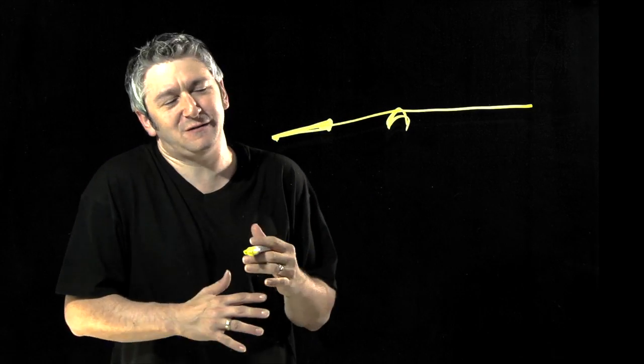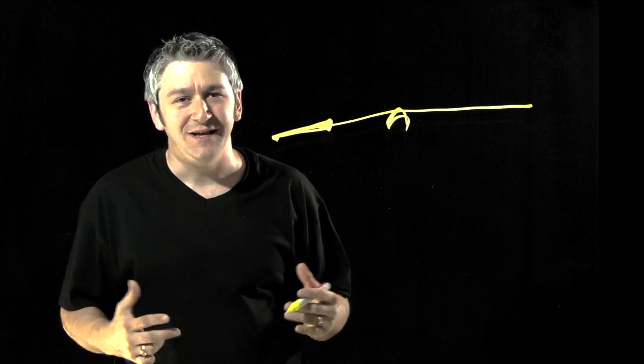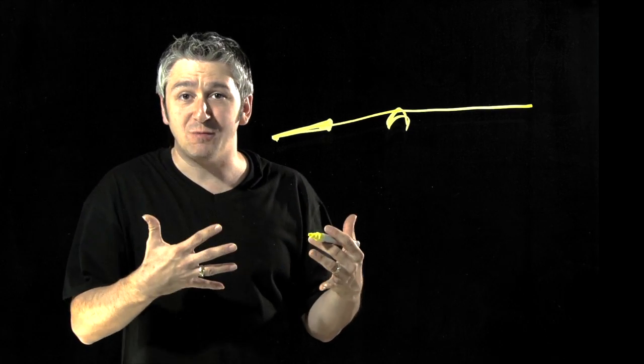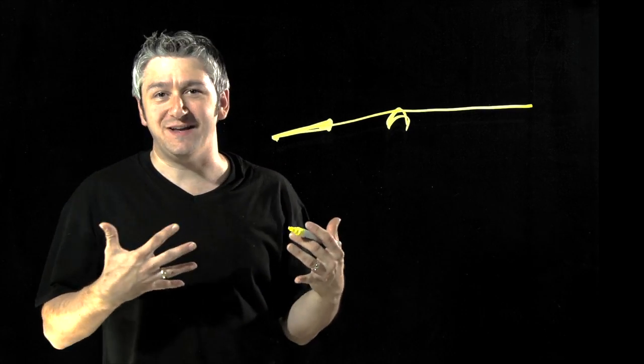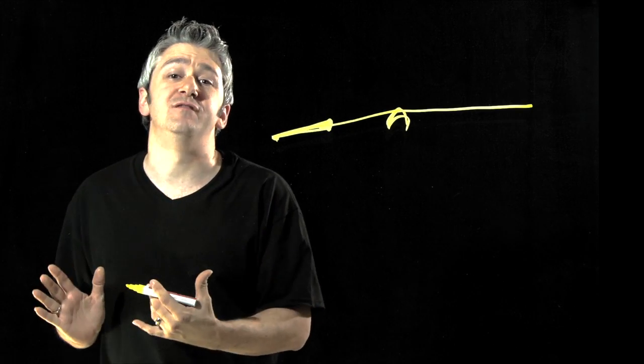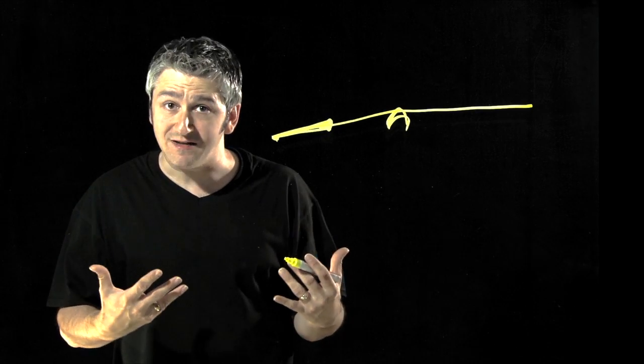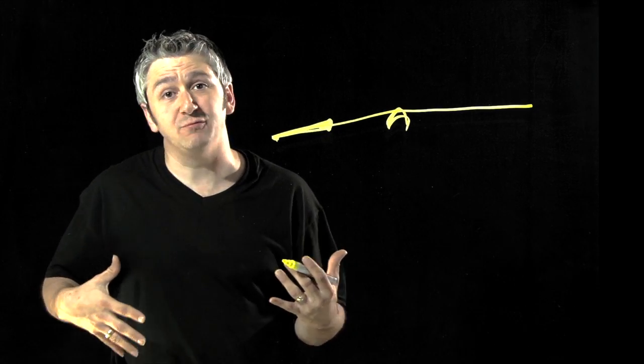But the problem there is a guitar sound completely changes. A trapeze tailpiece hollow body guitar still sounds fantastic, but it has its own unique voice. So it doesn't replicate the sound of a flat top with a glued on bridge.